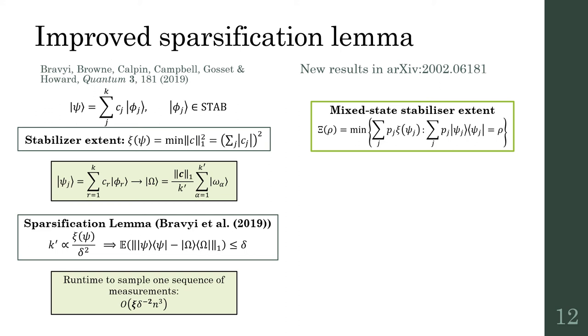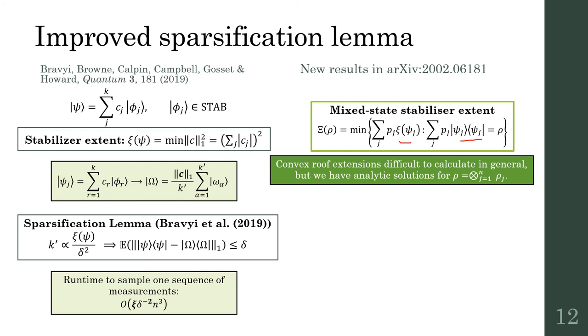In our paper, we first extend stabilizer extent to general density operators using the convex roof extension. We essentially take the minimum average extent over all possible ensemble decompositions. These are in general pure states, each with its own extent. Naively, the convex roof extension is difficult to compute, but we give a complete analytic solution for single-qubit states and tensor products of single-qubit states, so it is efficiently computable.